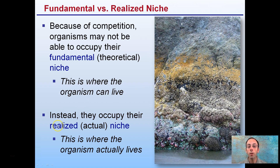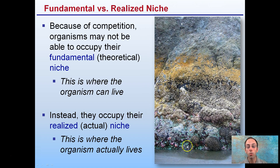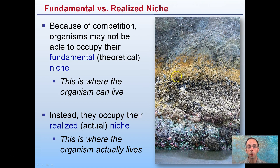Instead, organisms often occupy what's called their realized or actual niche — where the organism actually lives. For example, the light brown organism may be able to live over the entire intertidal zone from the high tide mark to the low tide mark. However, it gets outcompeted by the white-gray and blue organisms. Therefore, its realized niche is just below the high tide line, even though its fundamental niche could span the entire intertidal zone.